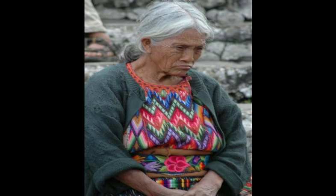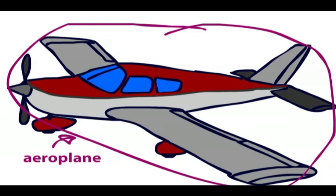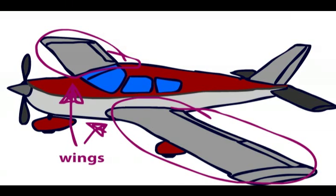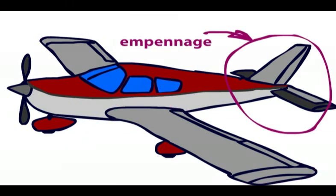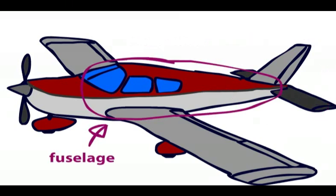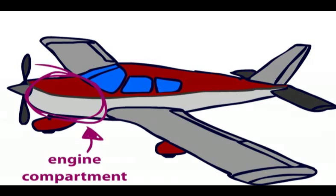So first things first. This is an airplane. The main features on an airplane include the wings, which are one of the more important parts of a plane, the empennage, which is the whole of that back construction there, the fuselage, which is where the cockpit is and where all the passengers and baggage live, and the engine compartment, which contains the engine.